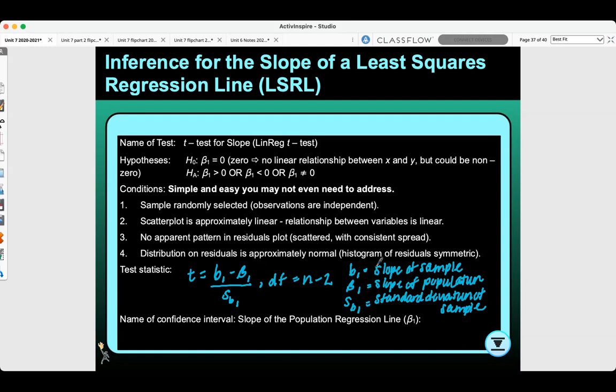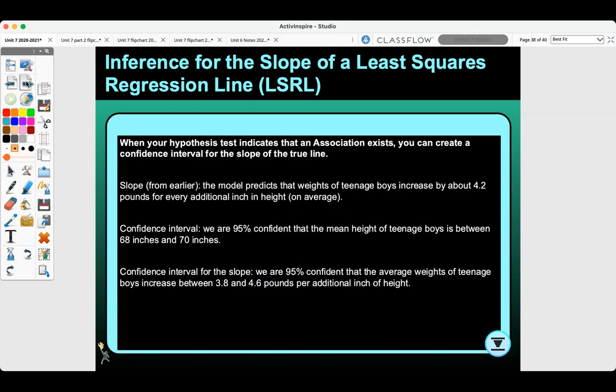The name of the confidence interval is the slope of the population regression line for b1 or beta 1. This would be b1 plus or minus t star times the standard deviation of b1. When your hypothesis test indicates that an association exists, you can create a confidence interval for the slope of the true line.